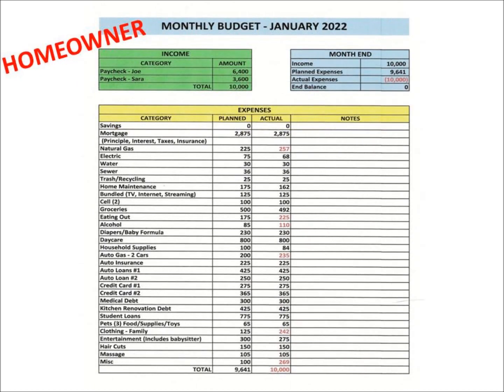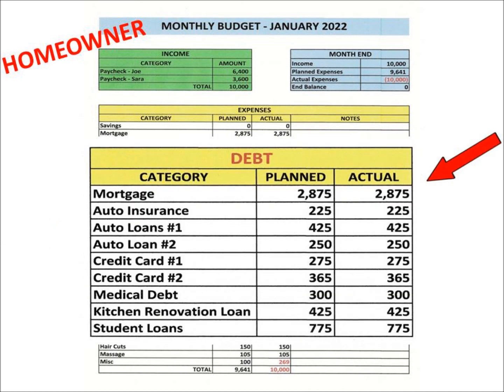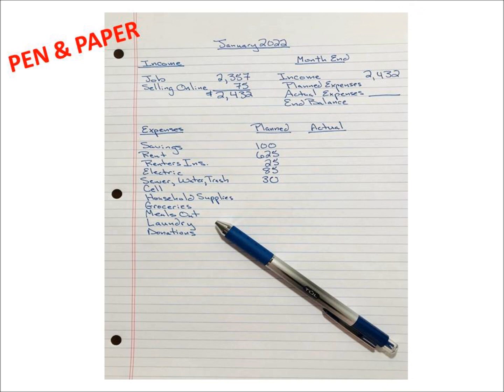The second example is a homeowner's budget. It has many different categories which are relevant to owning a home and which apply to their own life choices. For example, this homeowner has an infant. They have included diapers and baby formula, along with daycare, as categories. They also have multiple debts that they make payments on each month. The third example is a budget created with pen and paper. Use whatever format is easiest and most effective for you.